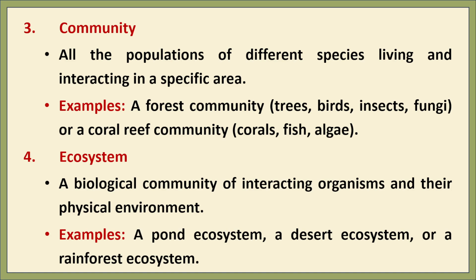The fourth level is ecosystem, which includes both living organisms (biotic factors) and their physical environment (abiotic factors). Examples include a pond ecosystem, desert ecosystem, or rainforest ecosystem. Ecosystems help us understand how energy flows and how different species depend on each other for survival.